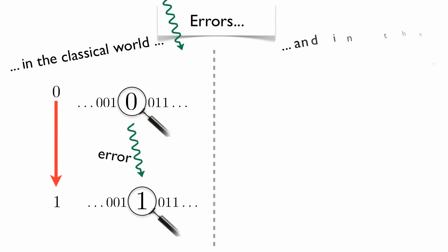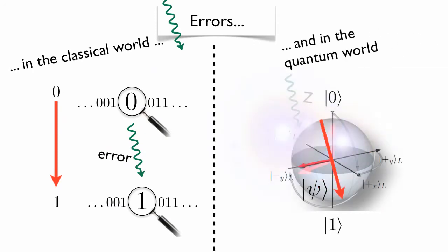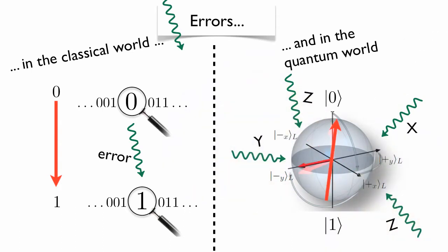In classical computers, errors can affect the stored information by changing their value from 0 to 1 and vice versa. Quantum information, though, is much more fragile and errors can act in many different ways.